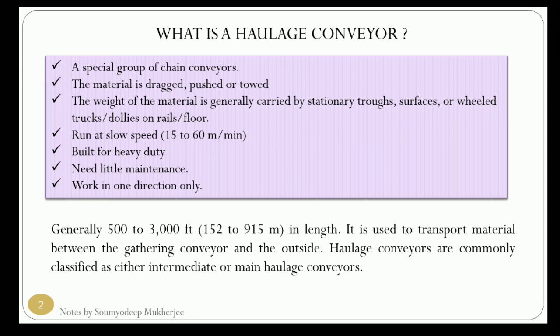The speed is in the range of 15 to 60 meters per minute, so it is a slow conveyor. Since it is slow, it is built for heavy duty — meaning it can convey a high amount of material or a huge load. Due to its heavy-duty build, it also needs very low maintenance, so maintenance cost becomes very low.